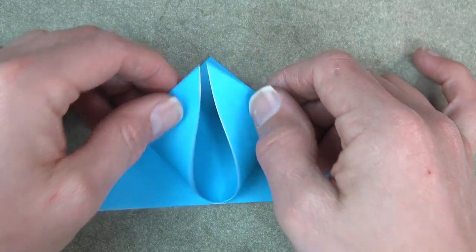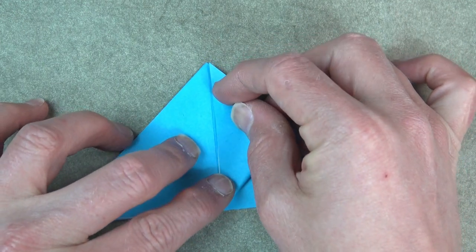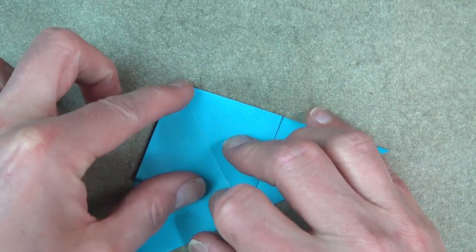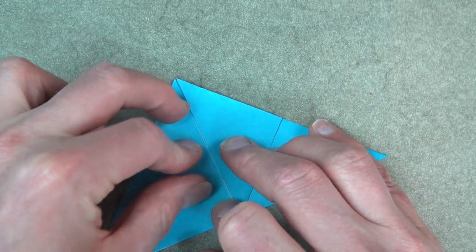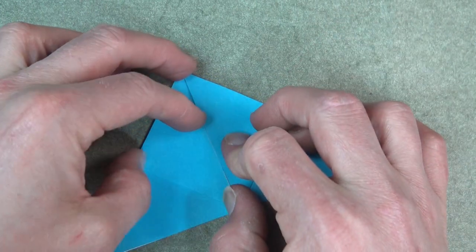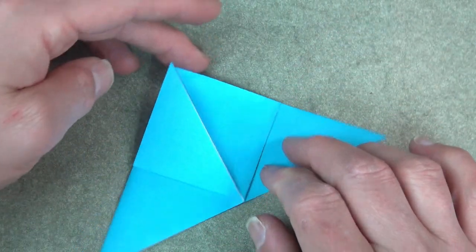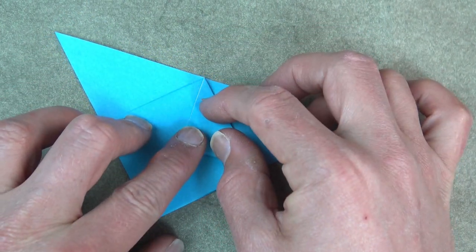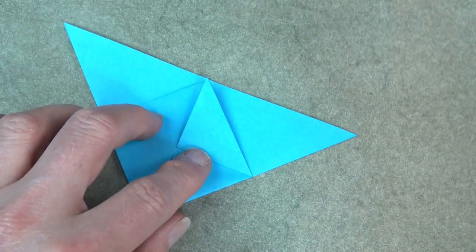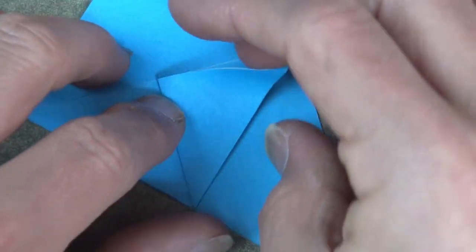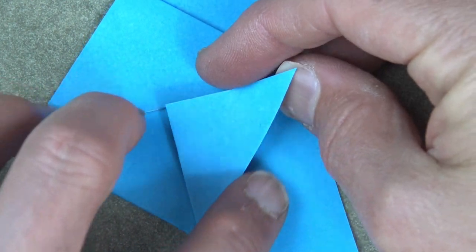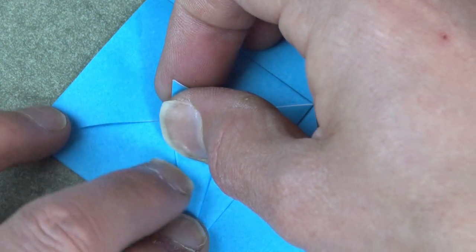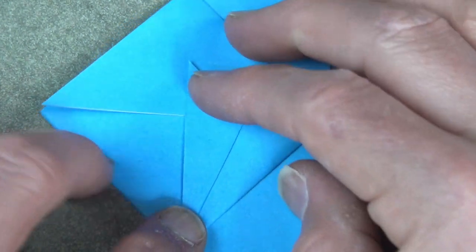And just like a water bomb, we're going to fold the two front flaps to the top. Rotate and fold the right flap to this point, and rotate. Now fold this flap so that this edge aligns with this edge, and rotate.